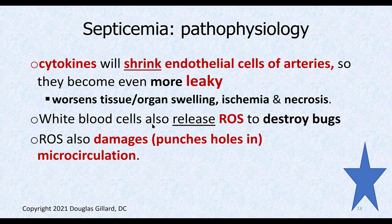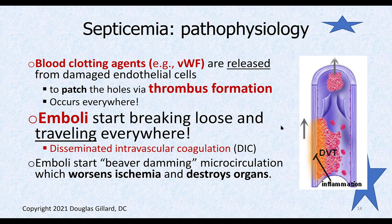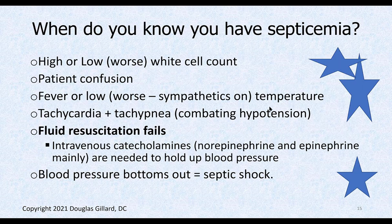White blood cells also release reactive oxygen species and cytokines, stimulating thrombosis and further leakage. Von Willebrand factor from irritated endothelial cells makes thrombi everywhere — in the lungs, kidneys, liver — and chunks of thrombus breaking loose send emboli flying throughout the body. How do you know when you have septicemia in the hospital? Patients will be confused because the brain is hypoxic; typically early on you have a very high white cell count, but later it can give up and you can have a low white cell count.